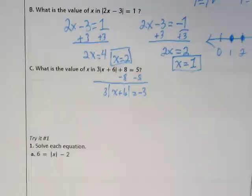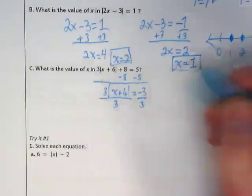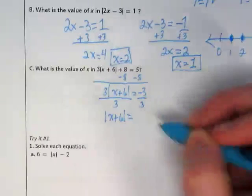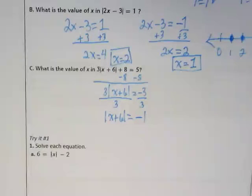We need to get the absolute value alone, and right now it's being multiplied by 3, so we're going to divide by 3. That's going to leave the absolute value of x plus 6 on the left side and a negative 1 on the right because negative 3 divided by positive 3 gives us negative 1.